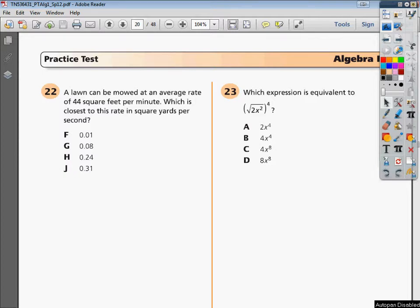It's really not that complicated. It's just there's one key component, and that's the question indicates that you're in square feet and they want it in square yards. First off, you have to start off all these types of problems by setting them up as they're designed. So the question says you can mow a lawn at an average rate of 44 square feet per minute. What is the closest in square yards per second?